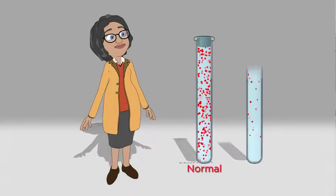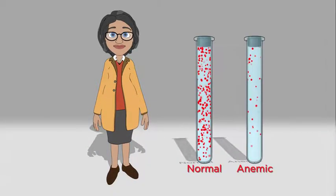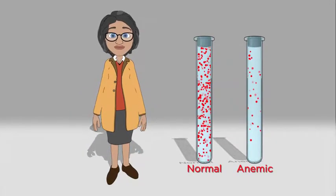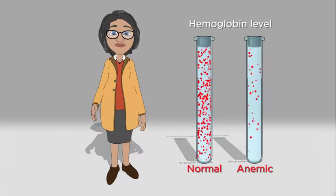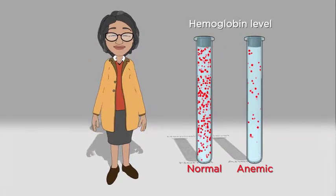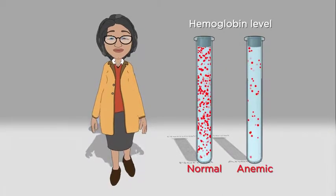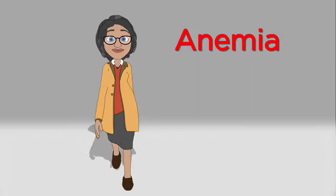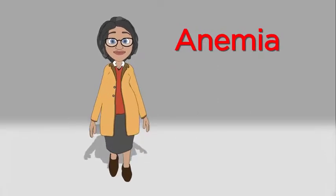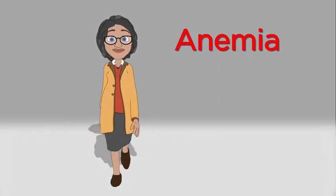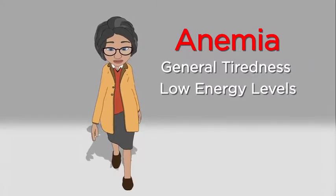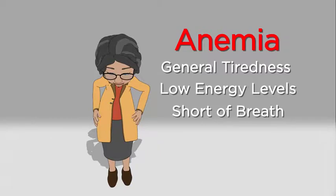First, anemia means that a person has a lower than normal amount of red blood cells in their blood. A simple blood test called the hemoglobin level is the best way to determine if a person has anemia. Many patients do not have any symptoms associated with their anemia. Those that do often report general tiredness and low energy levels. Some patients can become noticeably short of breath when they exert themselves.